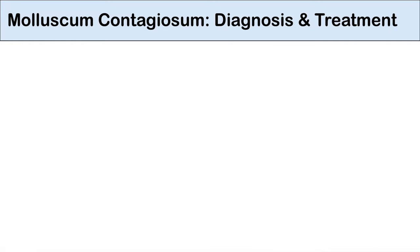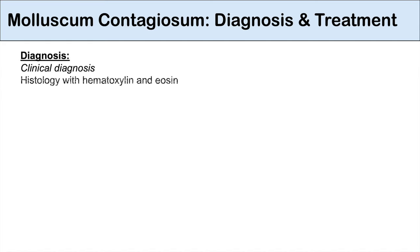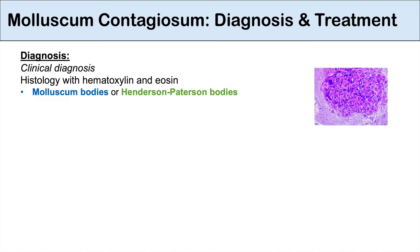So how do we make the diagnosis and treat molluscum contagiosum? The diagnosis is generally a clinical one — based on seeing a dome-shaped papule with a central umbilication, we can essentially diagnose molluscum contagiosum. We could also do histology on samples with hematoxylin and eosin, and we would see molluscum bodies, or Henderson-Patterson bodies, which would confirm the diagnosis. But again, it is generally a clinical diagnosis.